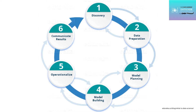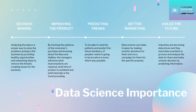Here's a small flowchart of six steps involved in data science: discovery, data preparation, model planning, and it goes on until we find a feasible solution. Then operationalize, and finally communicate results using different software such as Microsoft Power BI. The last step is mostly about preparing a document for storytelling.